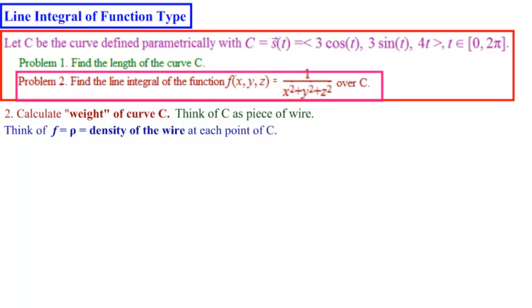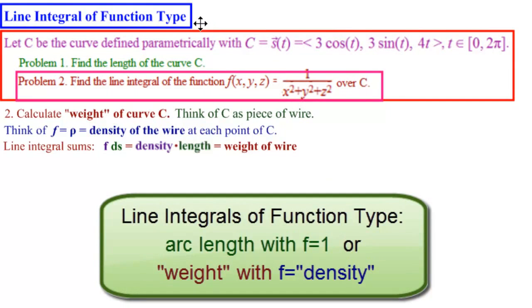And the idea is that the line integral will be summing f times ds. And that would be the density times the length. And that gives us the weight of the wire. So I tend to think of line integrals of function type as either giving me the length of the wire with f uniformly 1 everywhere, or it gives me a weight of the wire as the density function changes according to the position of the wire in the plane or in space.